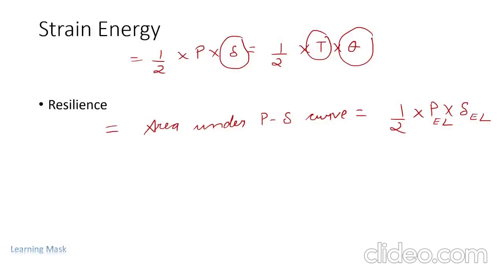Proof resilience is the maximum energy absorbing capacity of a material in the elastic region. In resilience we refer to energy absorbing capacity in the elastic region, but in proof resilience we specifically say maximum energy absorbing capacity in the elastic region.